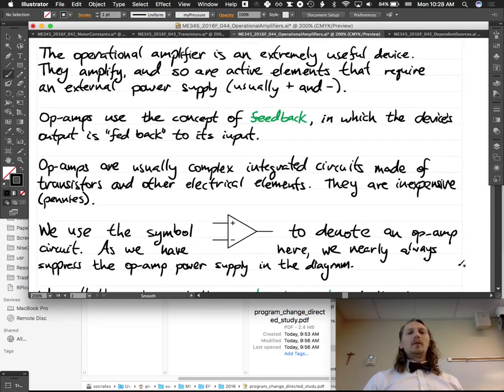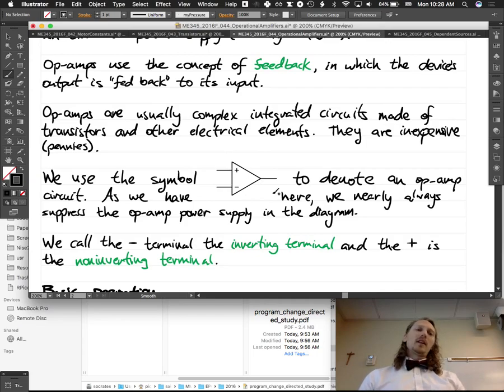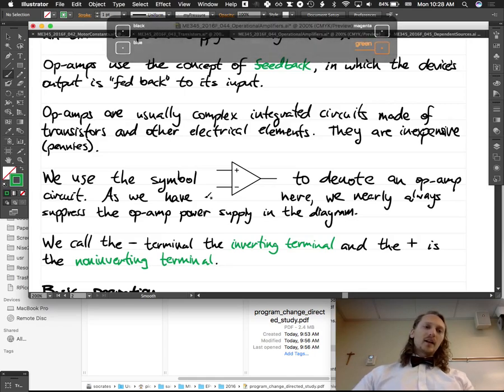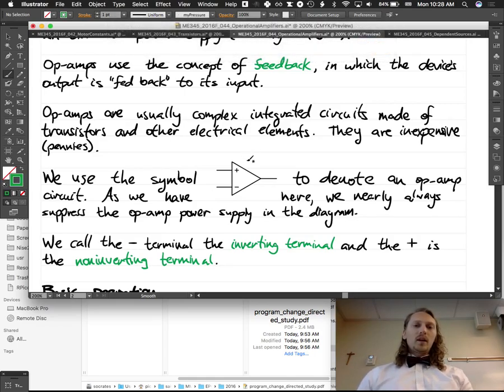We use the symbol, this, to denote an op-amp circuit. As we have here, we nearly always suppress the op-amp's power supply in the diagram. So these are not the power supply terminals. We're showing three terminals here, but we are not showing the two power supply terminals. The two power supply terminals, every once in a while, in a circuit diagram, we will show them, and we will show them coming in and out like this.